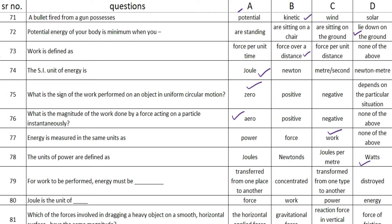The units of power are defined as a blank — and the answer is option D — watts. The next one: for work to be performed, energy must be blank — and the answer is option A — transferred from one place to another.